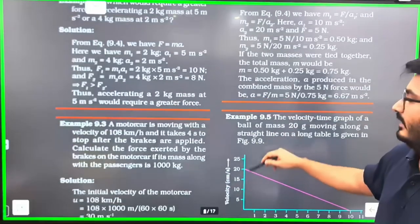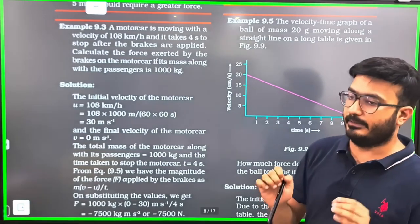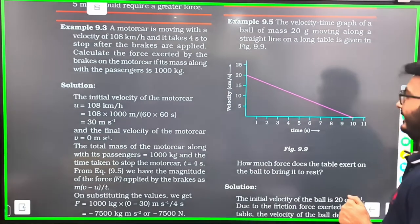This is problem 9.3. A motorcar is moving with a velocity of 108 km per hour. It takes 4 seconds to stop after the brakes are applied.